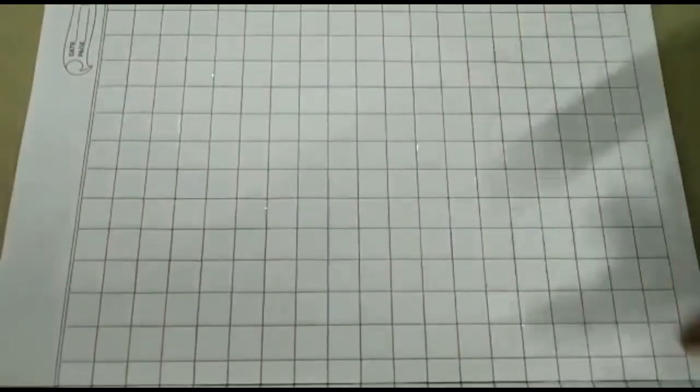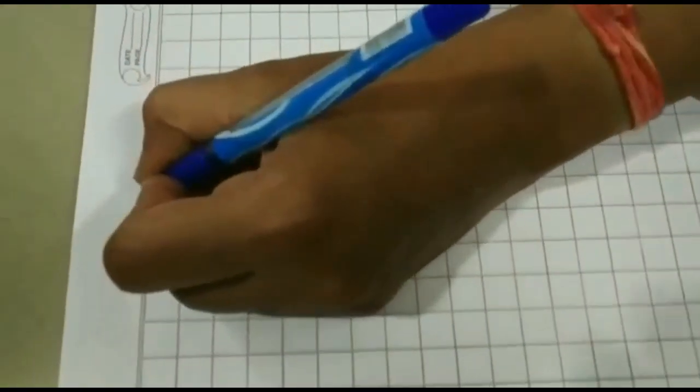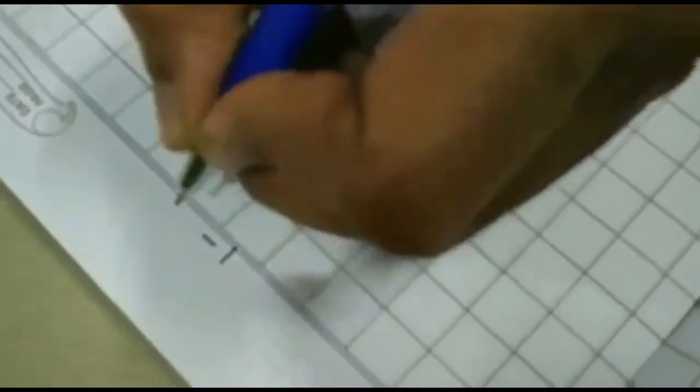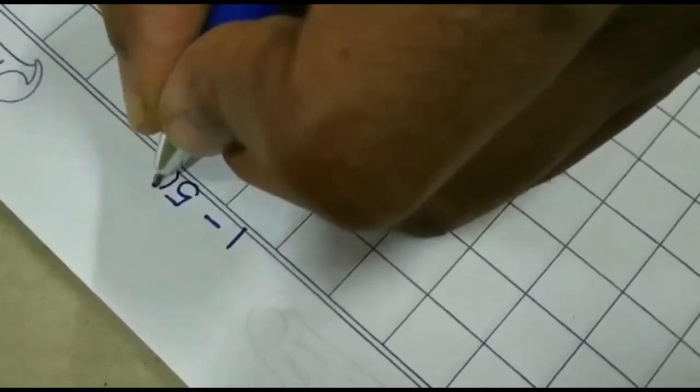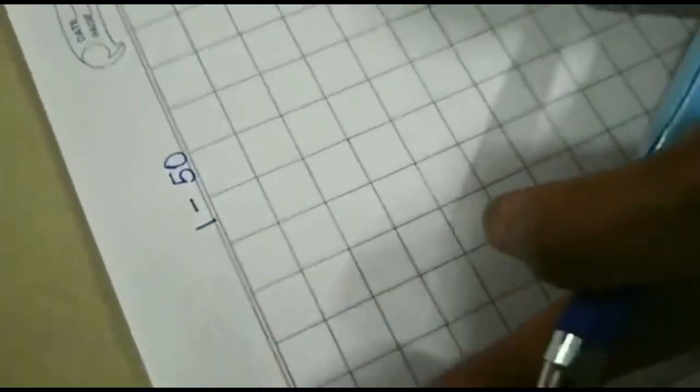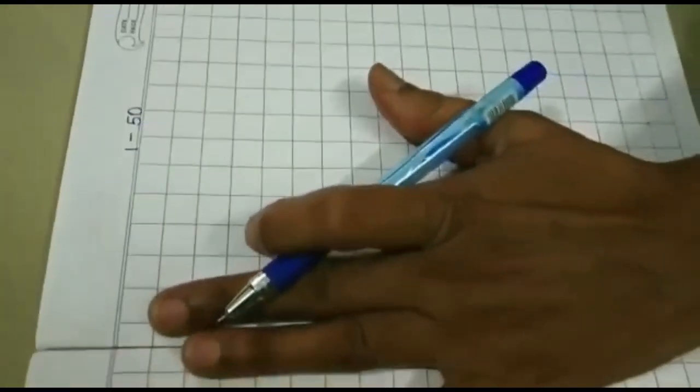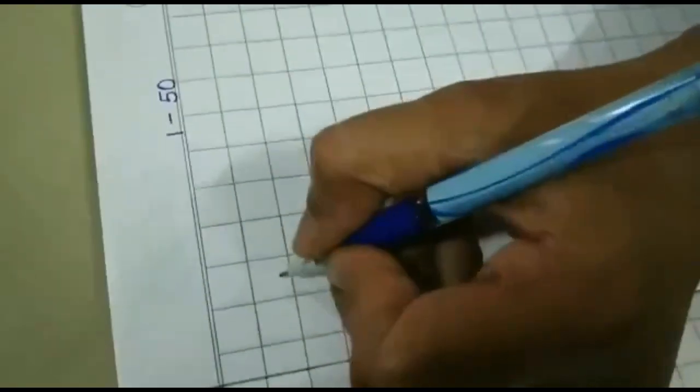Firstly, we will put the heading. You will put heading here. 1 dash 5 0, 50. Now leave one block and start from here. Right here.